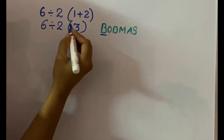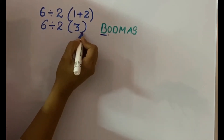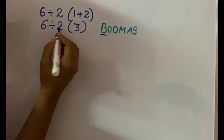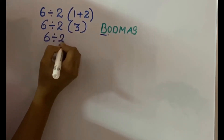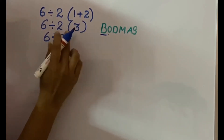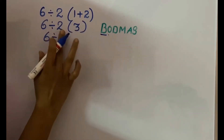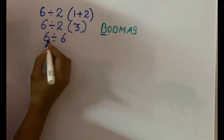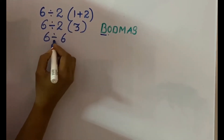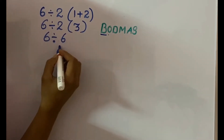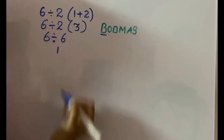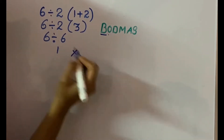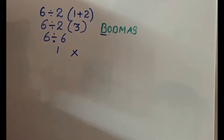Then, if you put the bracket like this and continue the operation, we will be doing: 6 divided by 2 into 3. Since it's a bracket, we do that first — 2 into 3 is 6. Then, if you do this division, 6 divided by 6, it's 1. But doing it this way is wrong. We must not follow this.